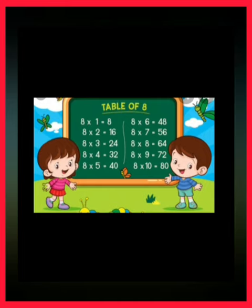Again we are going to revise table of 8 up to 5. 8 ones are 8. 8 twos are 16. 8 threes are 24. 8 fours are 32. 8 fives are 40.